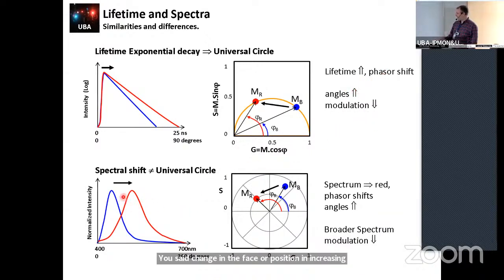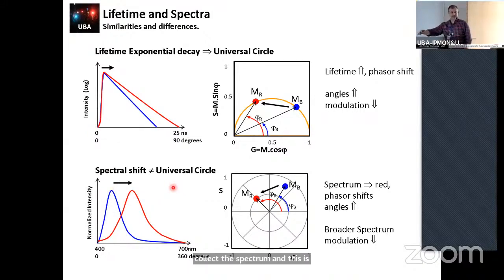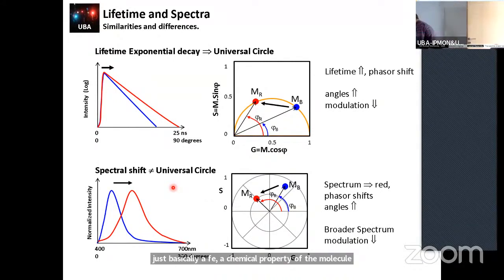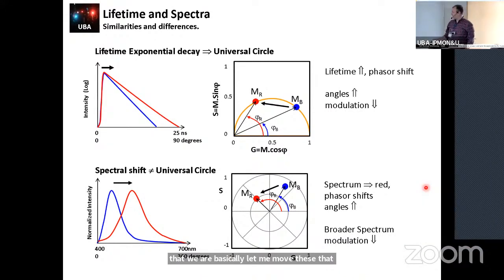In hyperspectral imaging, in a spectrum, you don't have a pulse and then a decay. You can have positions with the maximum anywhere in the range you collect the spectra. This is the first difference — we don't have a point where the decay starts. The shape of the spectra is basically a chemical and physical property of the molecule we are studying. But still, we can do this transformation.